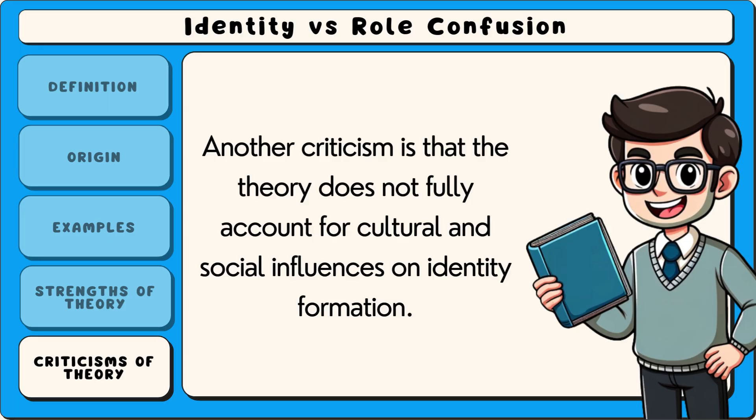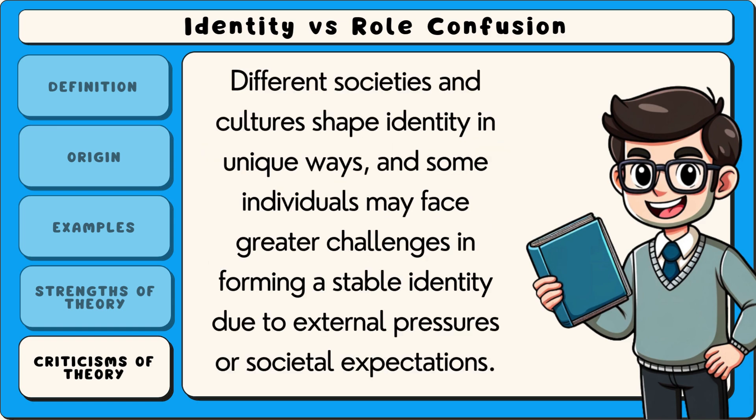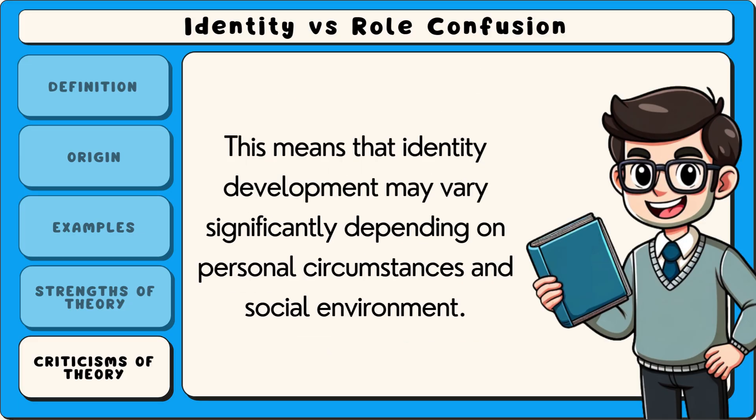Another criticism is that the theory does not fully account for cultural and social influences on identity formation. Different societies and cultures shape identity in unique ways, and some individuals may face greater challenges in forming a stable identity due to external pressures or societal expectations. This means that identity development may vary significantly depending on personal circumstances and social environment.